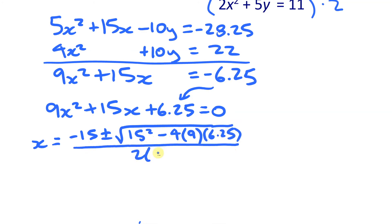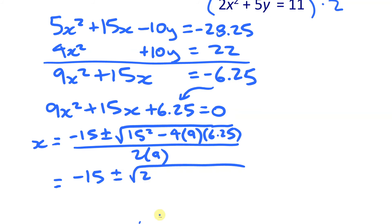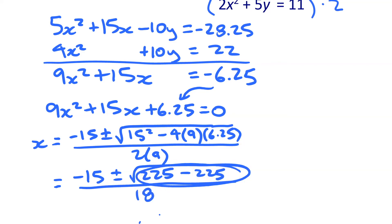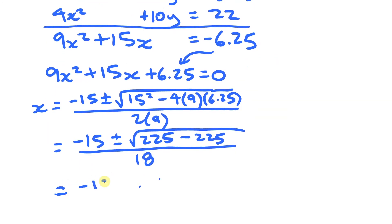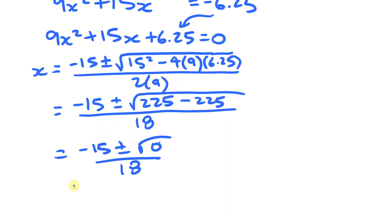Simplifying under the square root: √(225 − 225) / 18. This adds up to zero under the radical, giving −15 ± √0 over 18. Since the discriminant is zero, I'm only going to have one solution here.